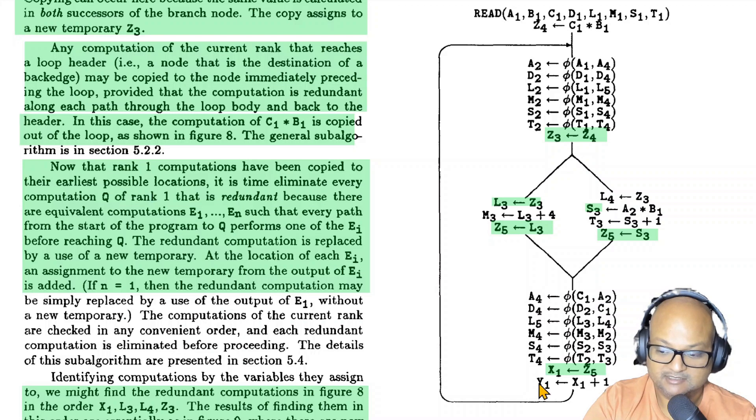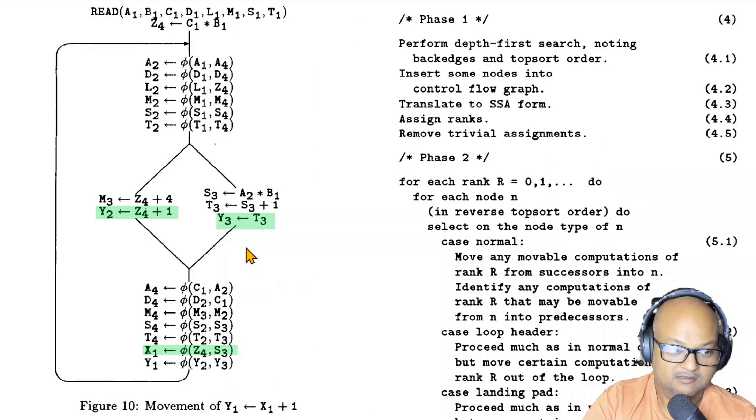And now since you've eliminated a bunch of these computations you're left with a lot of trivial assignments which as we saw can be very easily removed. And now that we've worked through all the rank one computations we can look at the next rank and in this case it's this assignment of y1 to x1 plus 1. And when we do a similar exercise with that computation which is to copy it upwards through the two branches just like we did for this example we will find a few other redundancies especially on the right branch over here.